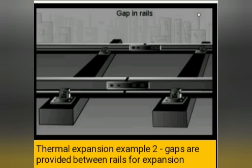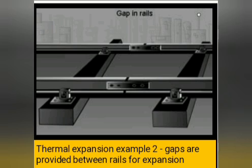Application of thermal expansion of solids — first: small gaps are left between successive rail tracks. Gaps have to be left between lengths of rail to allow for expansion caused by changes in atmospheric temperature as well as the heat generated by friction when wheels of the train pass over rails. If this is not done, the expansion of the rails would cause them to bend and may lead to an accident.